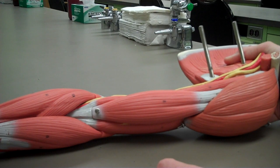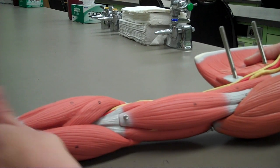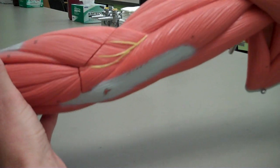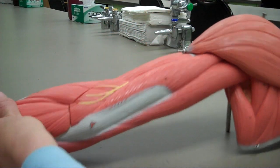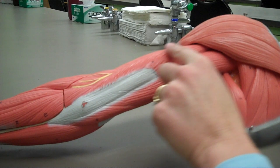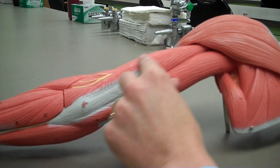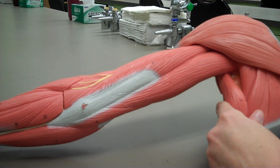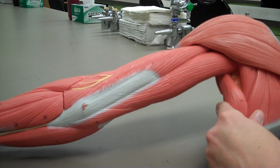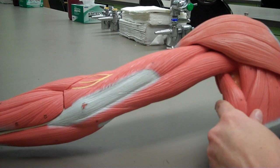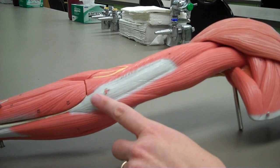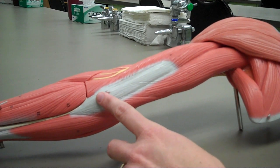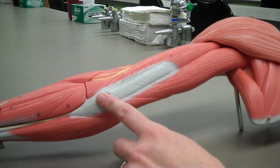The next muscle that I'd like to show you is on the posterior aspect of the arm, and this muscle is the triceps brachii. The triceps brachii has its origins on the infraglenoid tubercle of the scapula and the posterior humerus. It inserts on the olecranon process of the ulna, and it is responsible for extending the forearm.